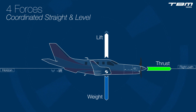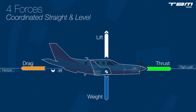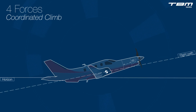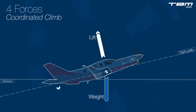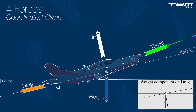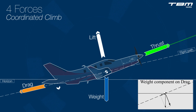Therefore, for simplicity, thrust pulls the aircraft forward inline and parallel to the longitudinal axis of the aircraft. Drag also acts parallel to the flight path or relative wind, but in the reverse direction. Weight acts towards the center of the earth, but during climb a percentage of the weight has an aft component which opposes thrust.